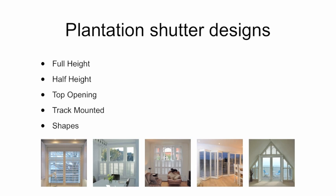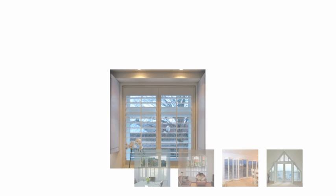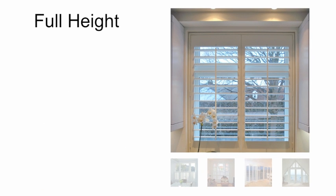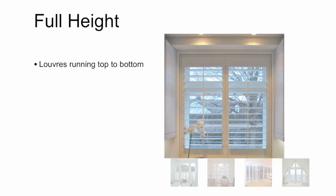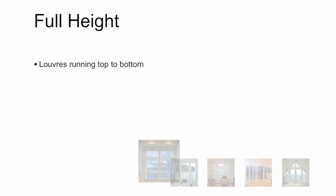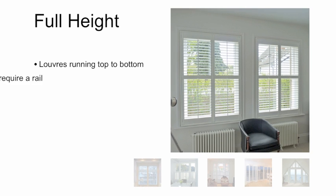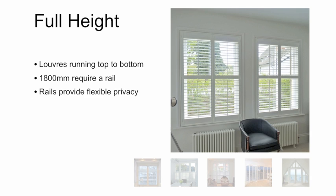The most popular plantation shutter design is full height. This is a single height shutter that fits between the sill and the top of the window. A full height design will have louver blades running from top to bottom of the shutter. You can choose this design with or without a horizontal dividing rail. Windows or doorways that are over 1800 millimeters high require a middle rail as standard, which adds strength to the shutter panel.